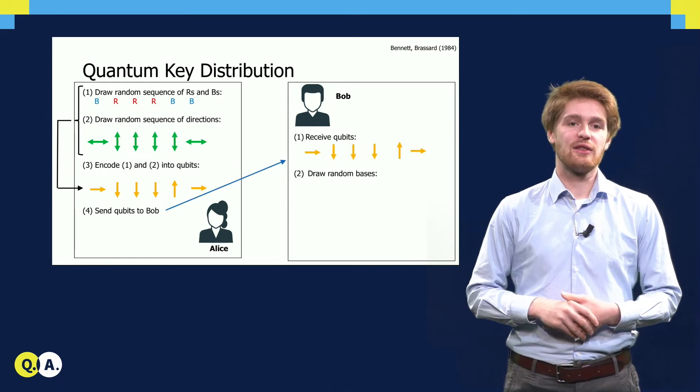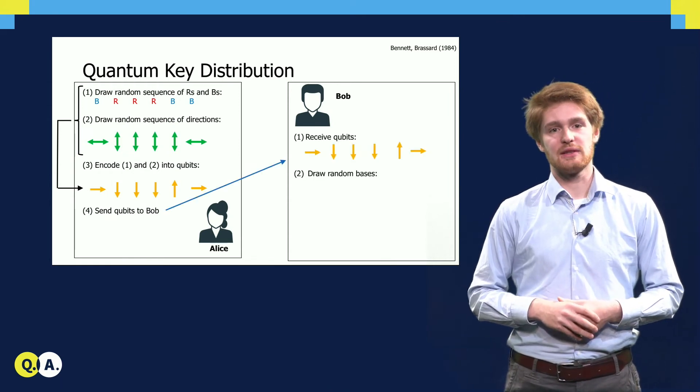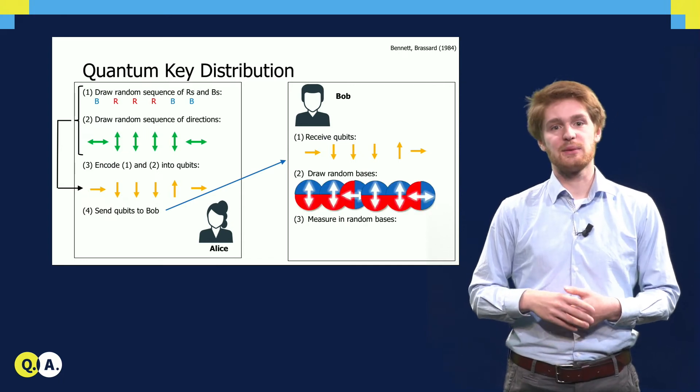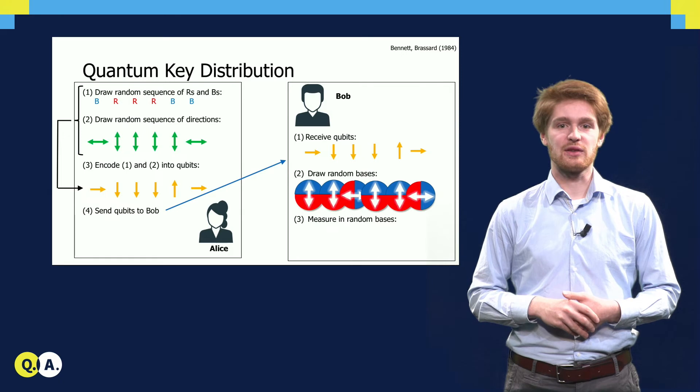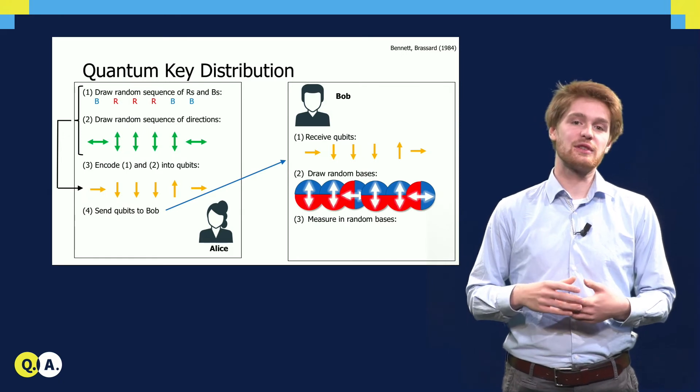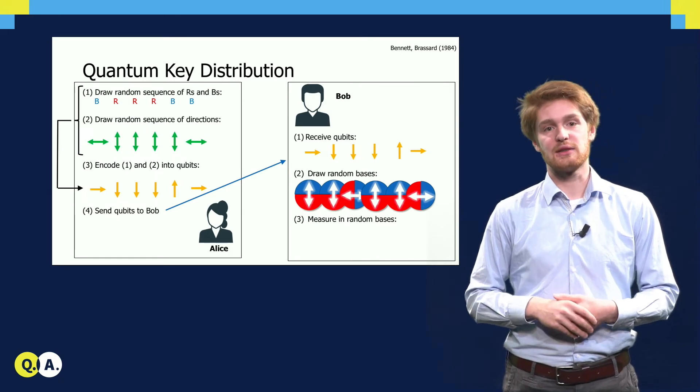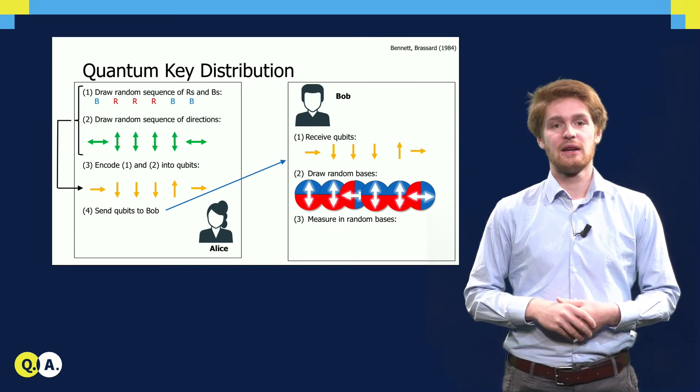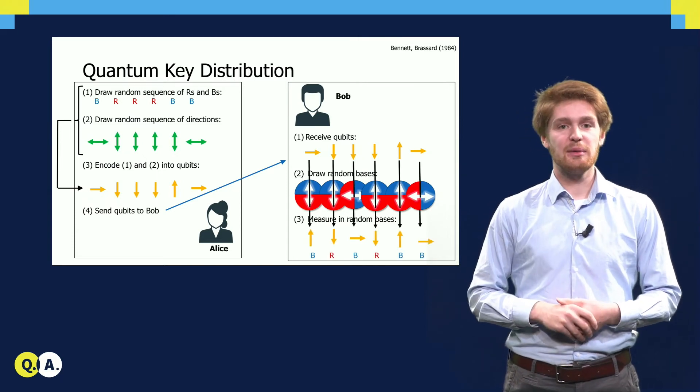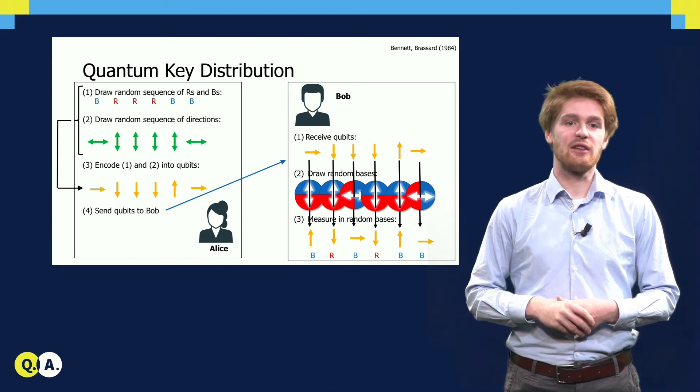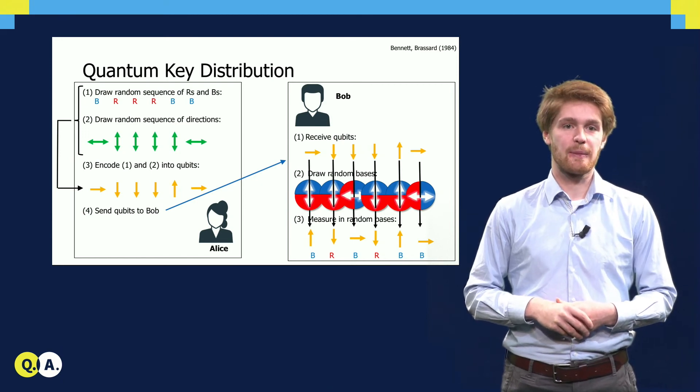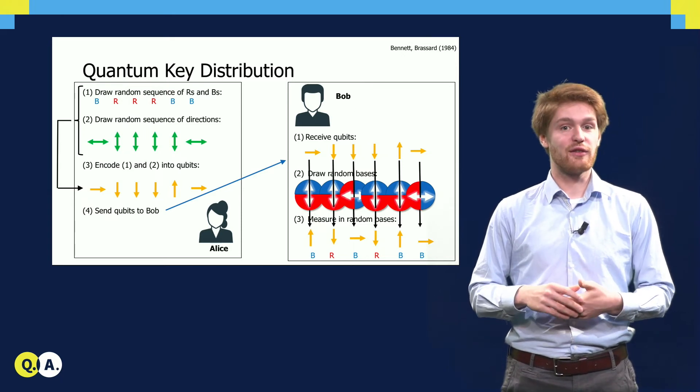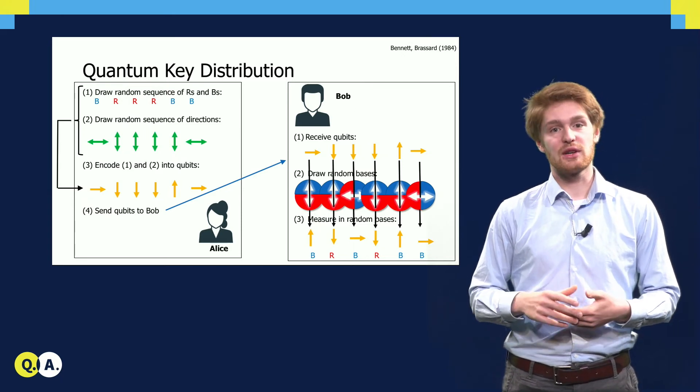Bob receives the qubit and draws a sequence of random measurement bases. Note that writing such bases as a direction, as we did here in green arrows on the left with Alice, comes down to precisely the same thing as writing them as measurement bases here on the right with Bob. In the next step, Bob measures the qubits he received from Alice bitwise in a randomly chosen basis.